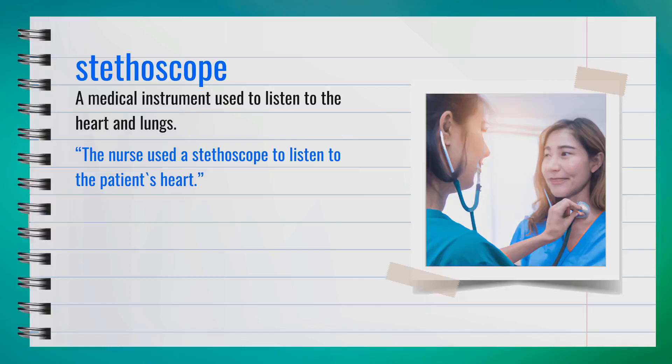The word stethoscope, spelled S-T-E-T-H-O-S-C-O-P-E, is a noun. A stethoscope is a medical instrument used to listen to the heart and lungs. Think of it as a tool for doctors to hear your heartbeat and breathing. For example, the nurse used a stethoscope to listen to the patient's heart.